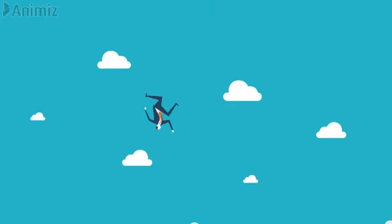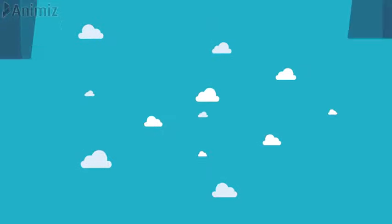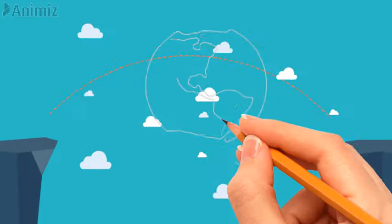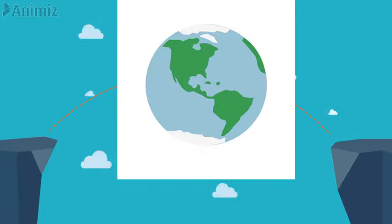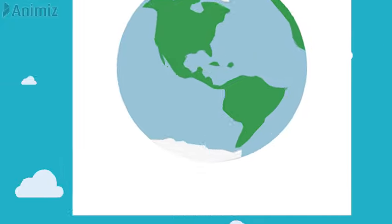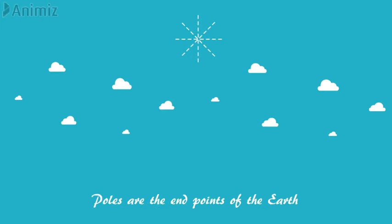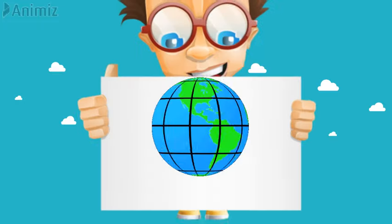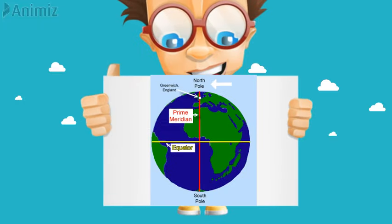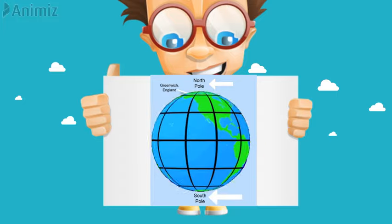We know that the shape of the earth is like an orange. It bulges at the center and is slightly flattened at the poles. Poles are the end points of the earth. As you can see here, the northernmost part is called the north pole and the southernmost part is called the south pole.